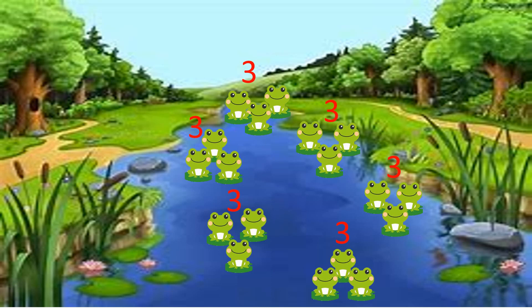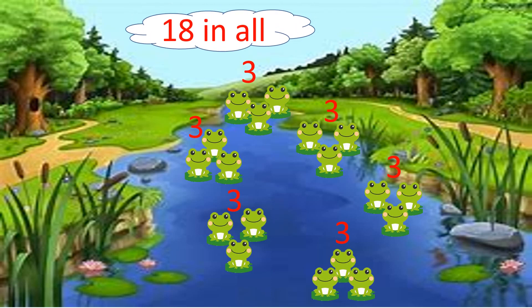Let me find the total number of frogs. We'll use skip counting, but now we use skip counting by three: three, six, nine, twelve, fifteen, eighteen. We have eighteen frogs in all! We have six equal groups and each group contains three frogs.